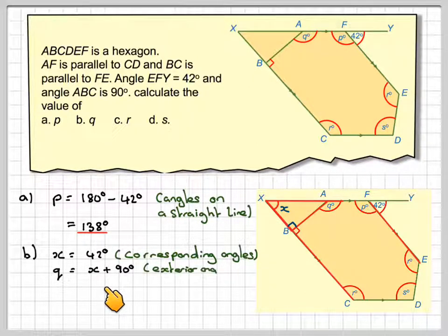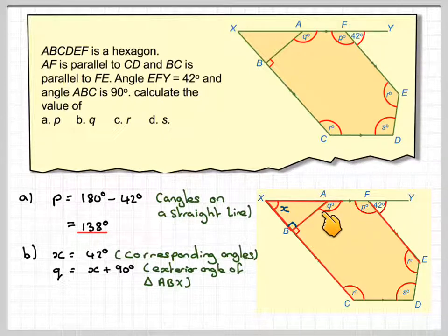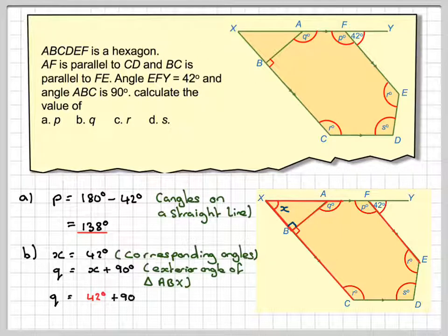Q will be equal to X plus 90 because X plus 90 must be equal to the exterior angle of this triangle ABX. This is an exterior angle, and the opposite two interior angles make the exterior angle of a triangle. Therefore, Q will be equal to 42 plus 90, which is equal to 132 degrees.